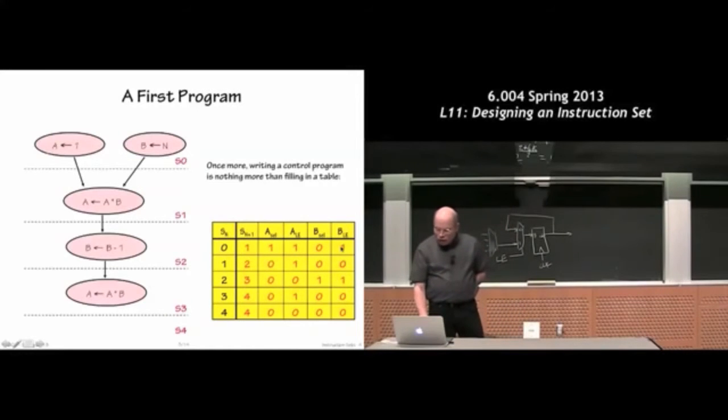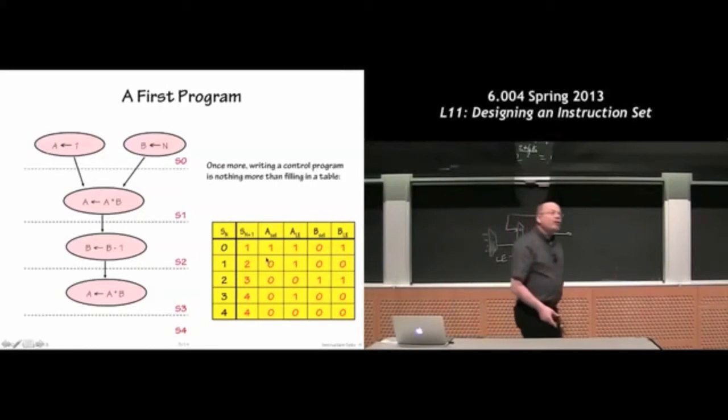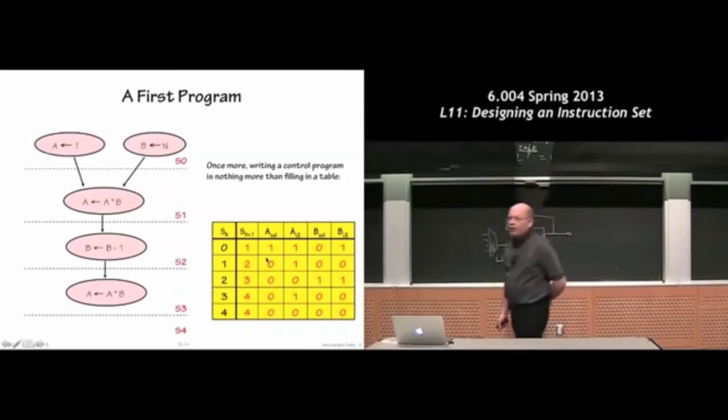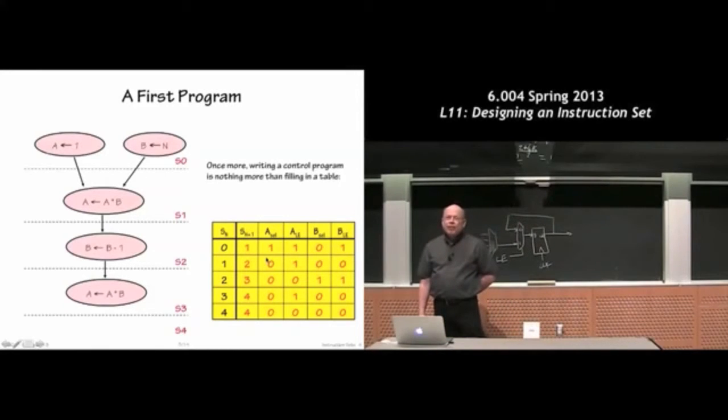And so you can see how this sequence of operations is translated directly into a particular combination of control signals, which causes the data path to actually execute the specified operations. It's a pretty simple recipe, pretty straightforward. Any questions about that?